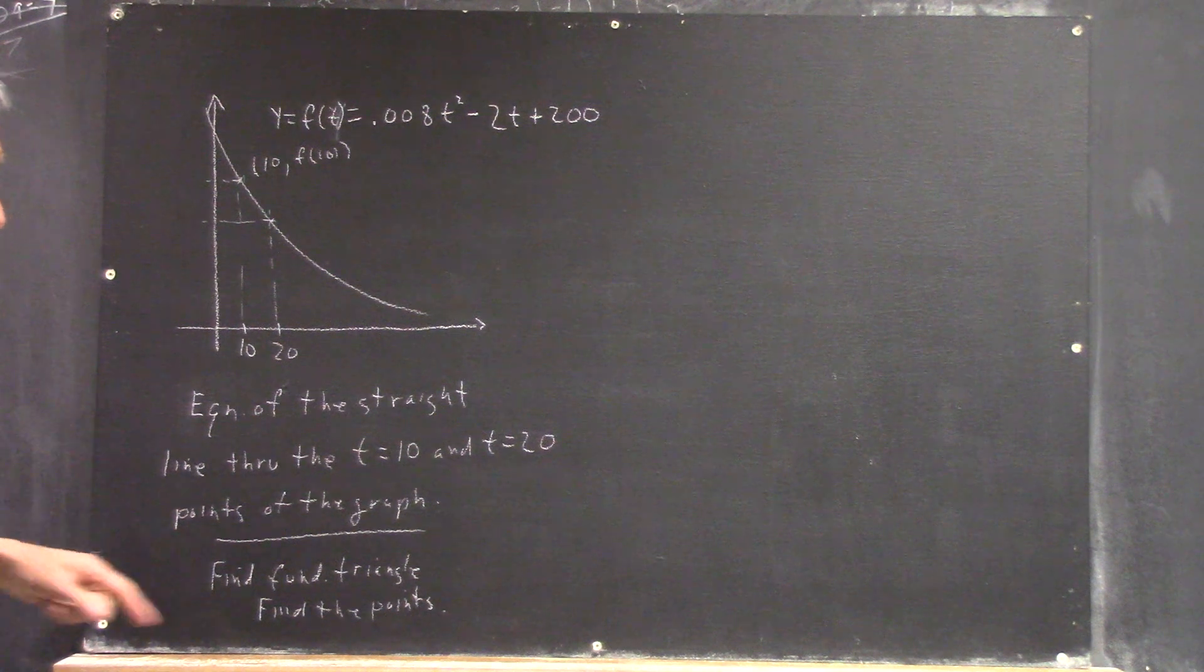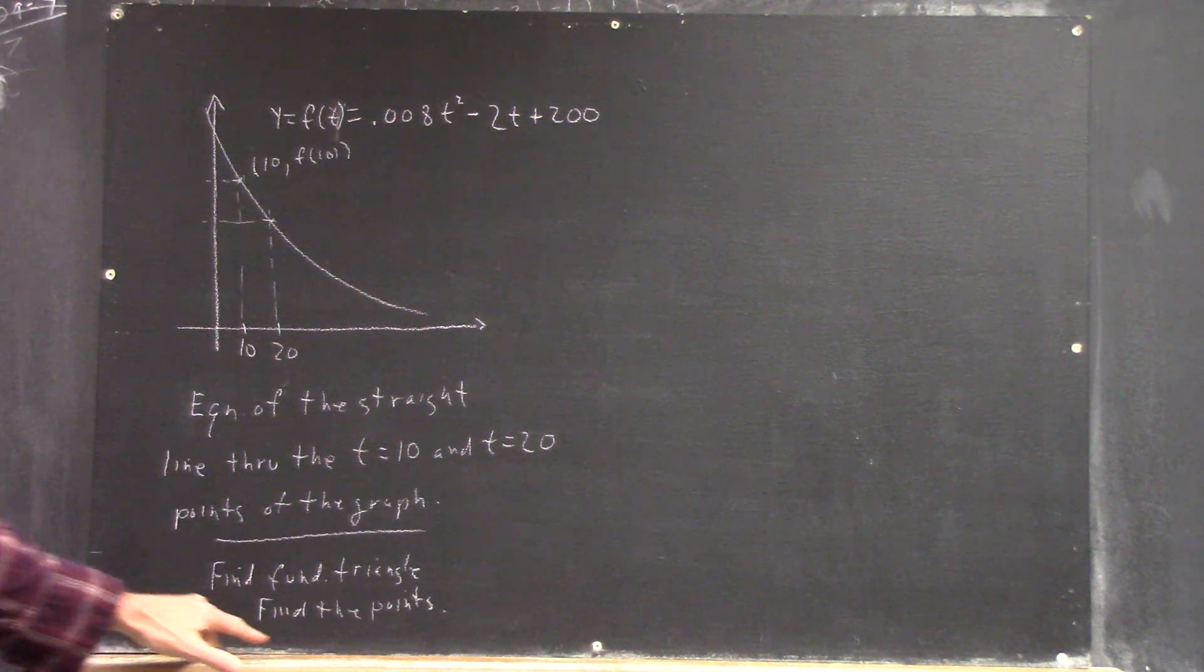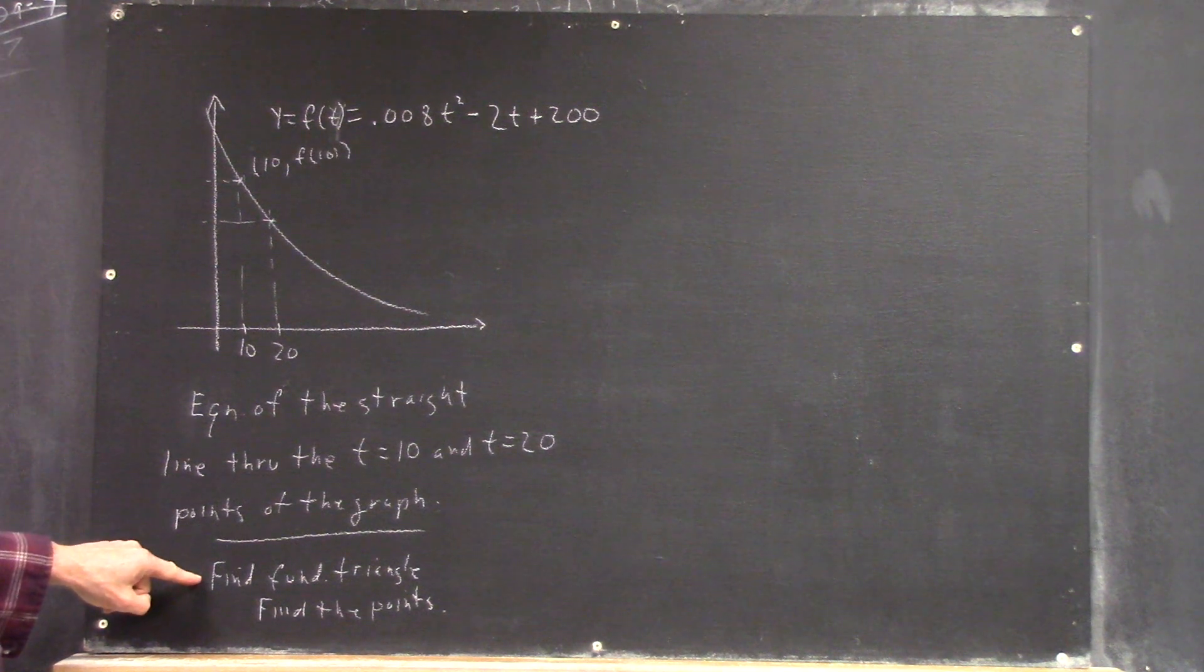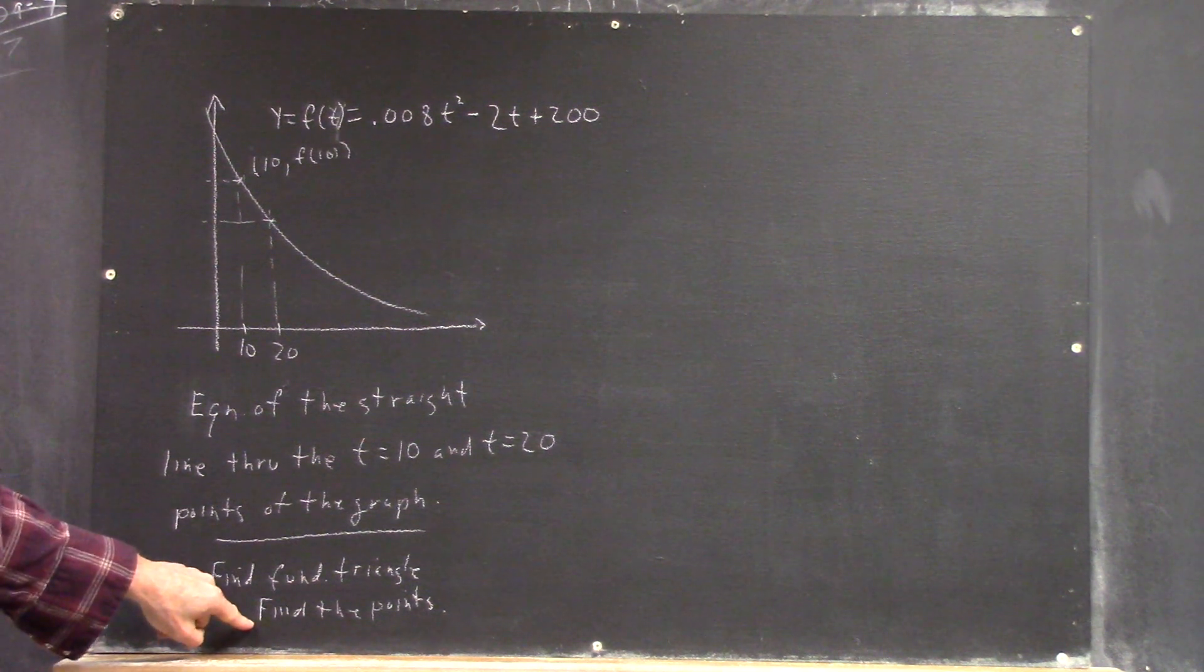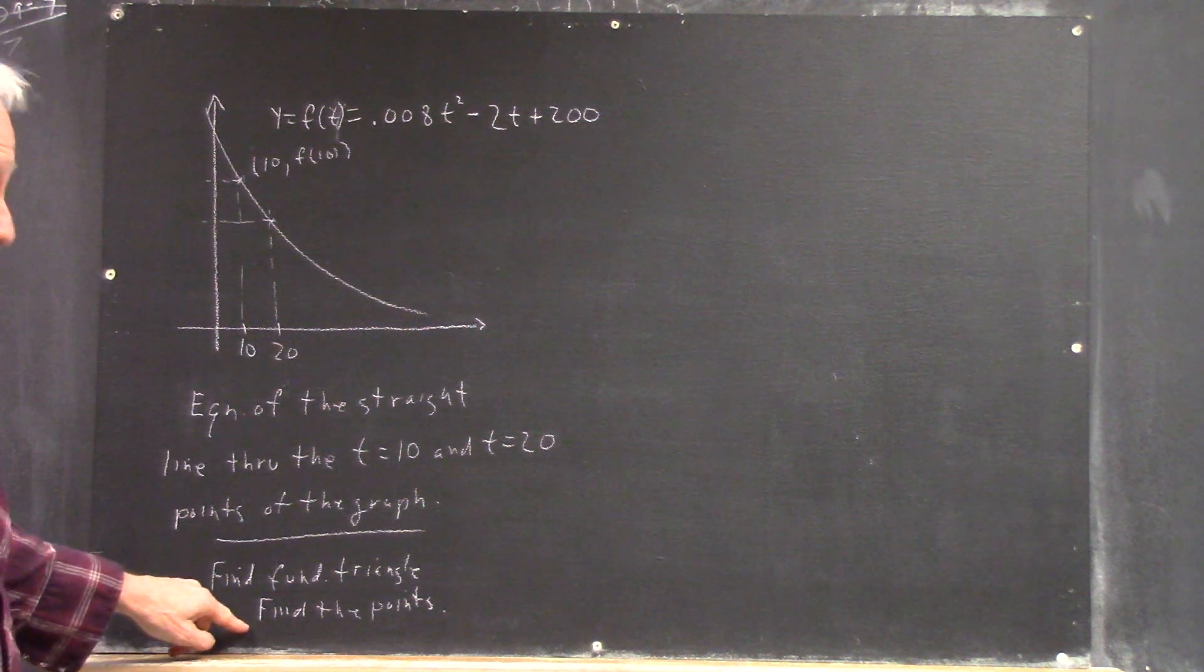I would have started by finding the points so you could find the fundamental triangle. But if you know that finding the fundamental triangle involves finding the points, it doesn't really matter. So that's perfectly good as long as you know to do this.